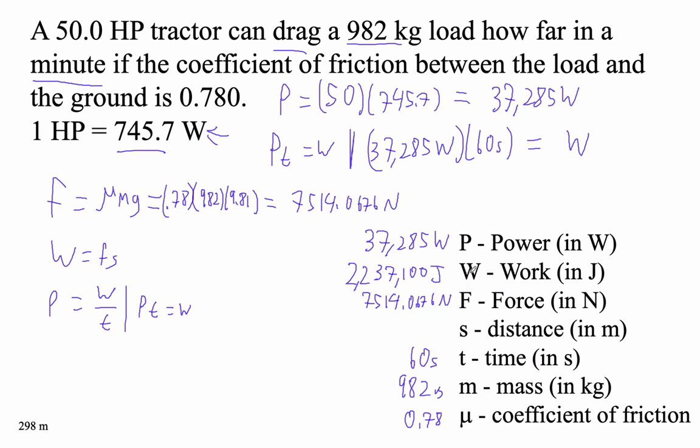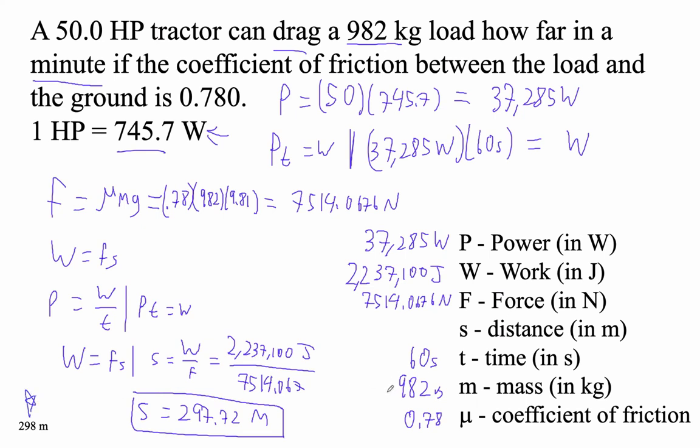All right, now we've got force and work, and we can find distance. Are we ready for this? That's excellent. So we're going to do this. Work is Fs. So S is work divided by force. So let's see. What's our work? That's a lot of work. 2,237,100 joules divided by the force, which is 7,514.067. I think we've got this. So that guy divided by this guy. I'm using my up arrow. And I'm getting that the displacement is 297.72 meters. I guess with three sig figs, you'd say 298. Yeah. All right.